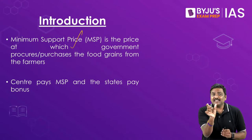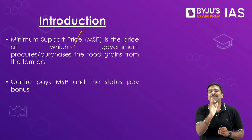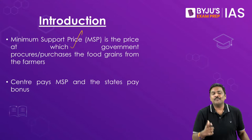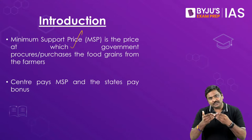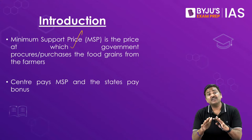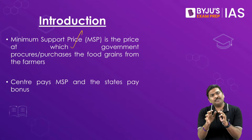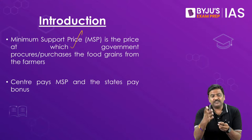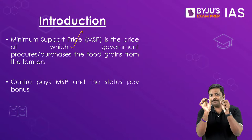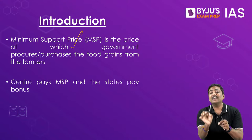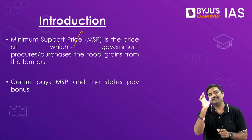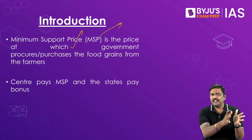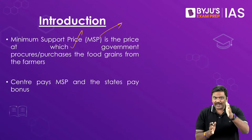MSP is basically the price that is paid by the government whenever they procure the food grain from the farmers. Any crop that is procured by the government — the price the government will pay to the farmer when they procure it — that price is called Minimum Support Price. The MSP can be traced back to the Green Revolution period.